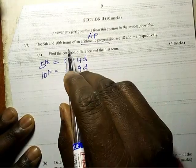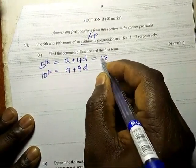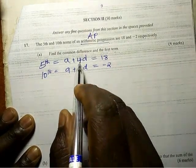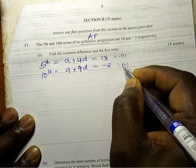Fine. In number, what the fifth term is, so this one is equal to 18 and this one is equal to negative 2. So we are going to solve this, this is our equation 1, equation 2.